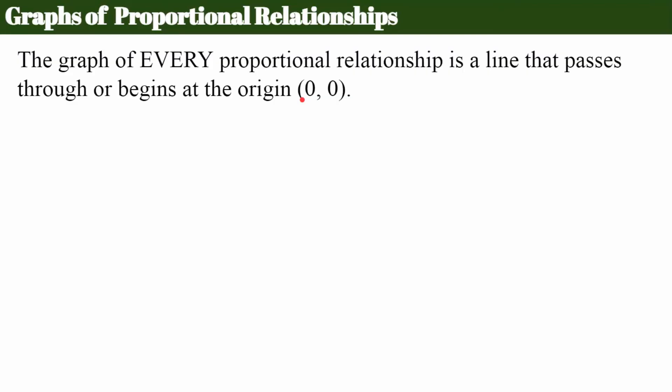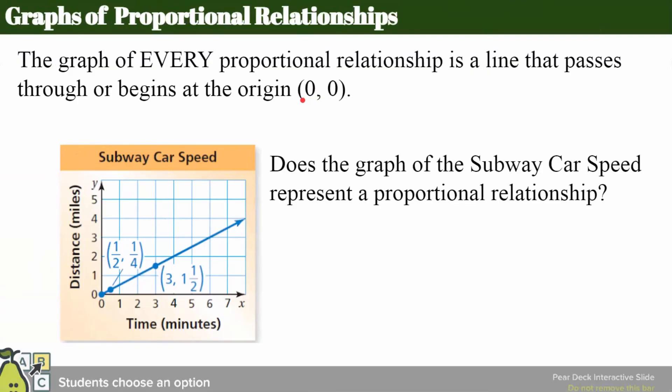Remember the origin is the ordered pair (0,0). And again, we're looking to see if a graph starts at the origin, like physically touches the origin, or if it passes through. So here's an example. The graph of every proportional relationship is a line that passes through or begins at the origin. Remembering, this is the idea that we're using.